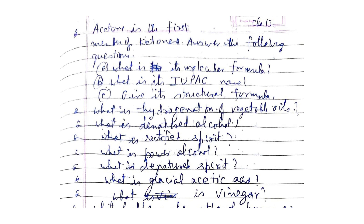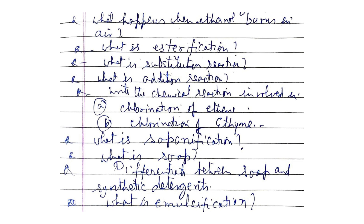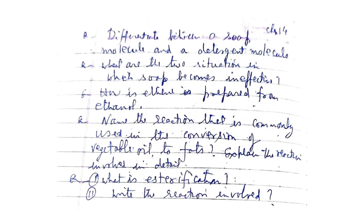What is vinegar? What happens when ethanol burns in air? What is esterification? What is a substitution reaction? What is an addition reaction? Write the chemical reaction involved in chlorination of ethyne. What is saponification? What is soap? Differentiate between soap and synthetic detergent. What is emulsification? Differentiate between a soap molecule and a detergent molecule. What are the two situations in which soap becomes ineffective? How is ethene prepared from ethanol? Name the reaction commonly used in the conversion of vegetable oil to fat, and explain the reaction involved.